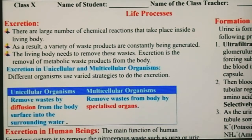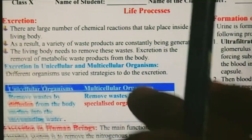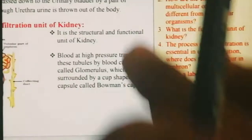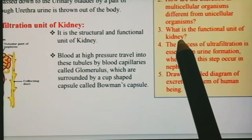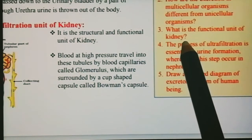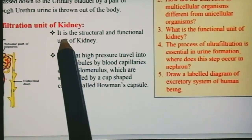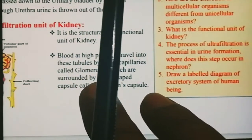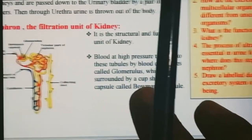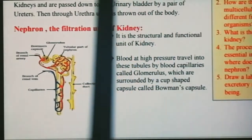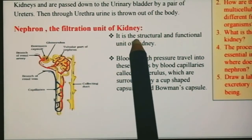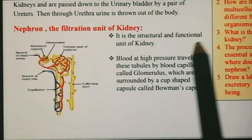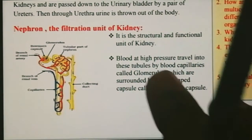जैसे आपकी kidney होती है। Question number 3: What is the functional unit of the kidney? Kidney की functional unit क्या है? Nephron. Nephron is the structural and functional unit of the kidney.